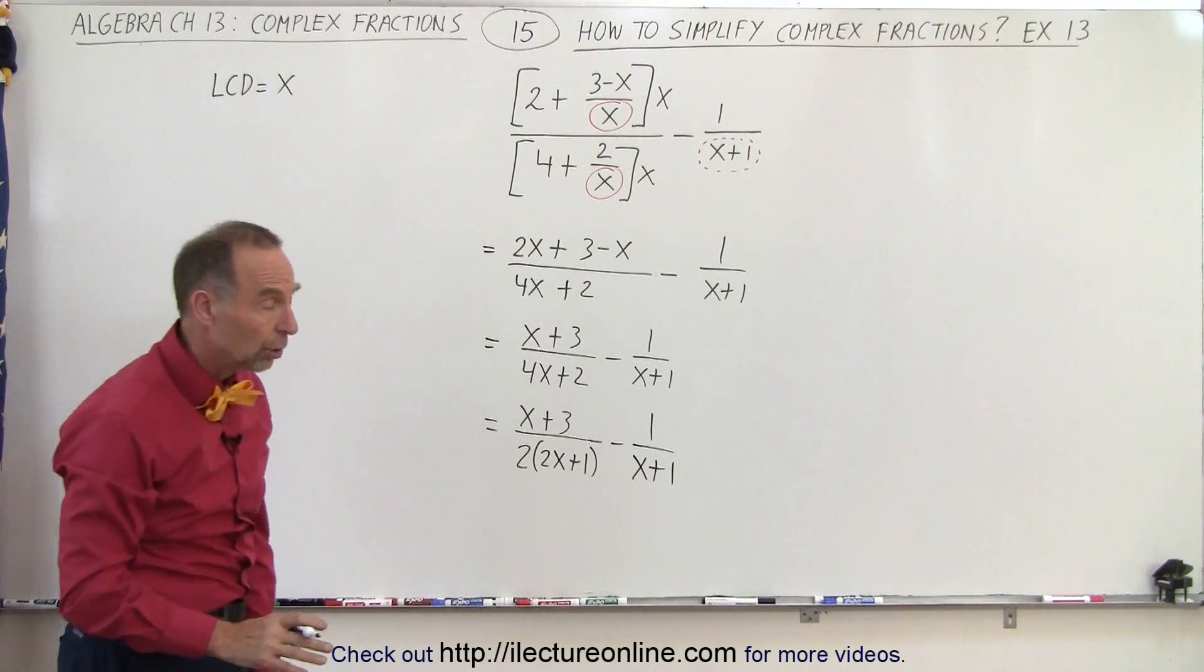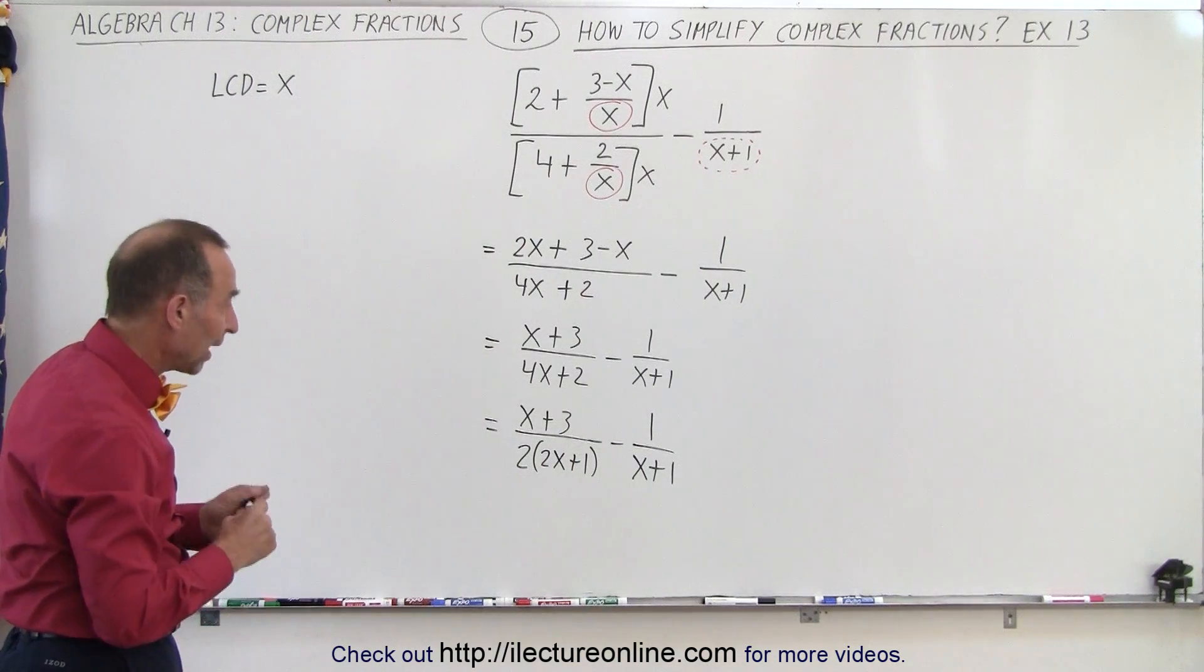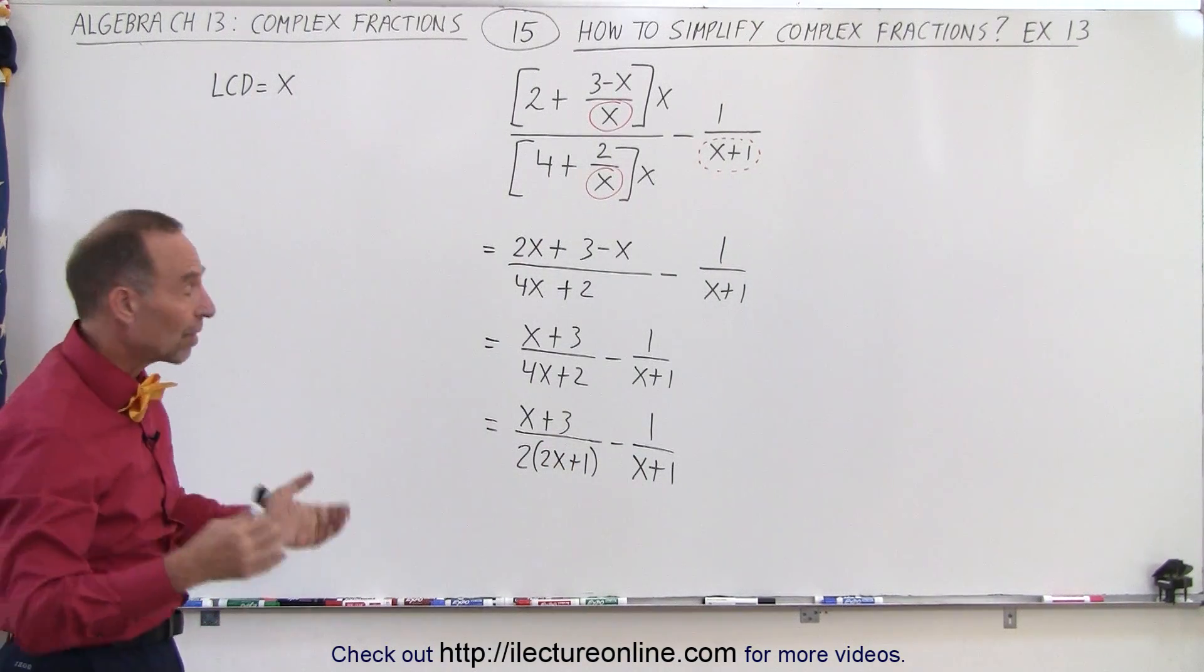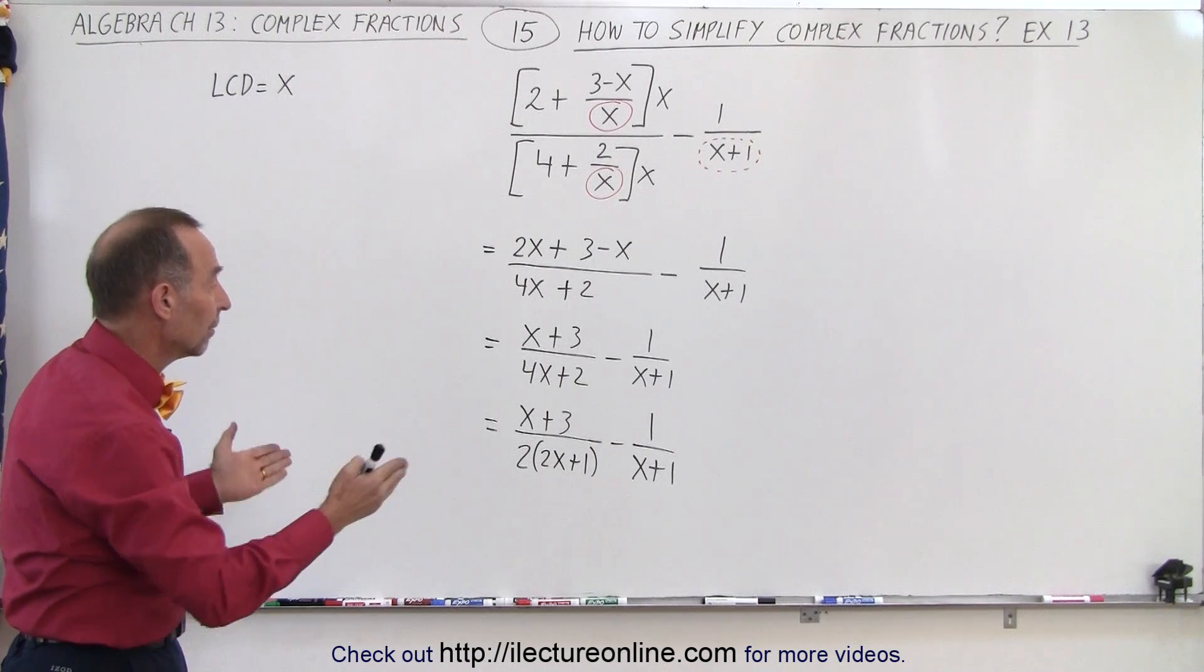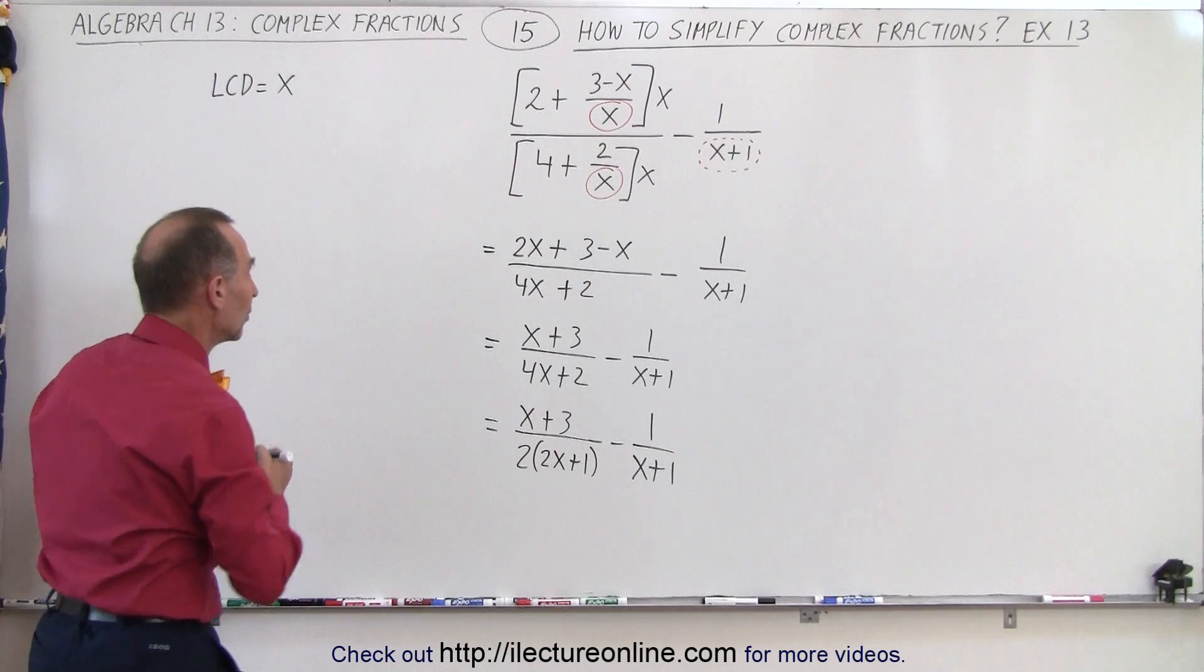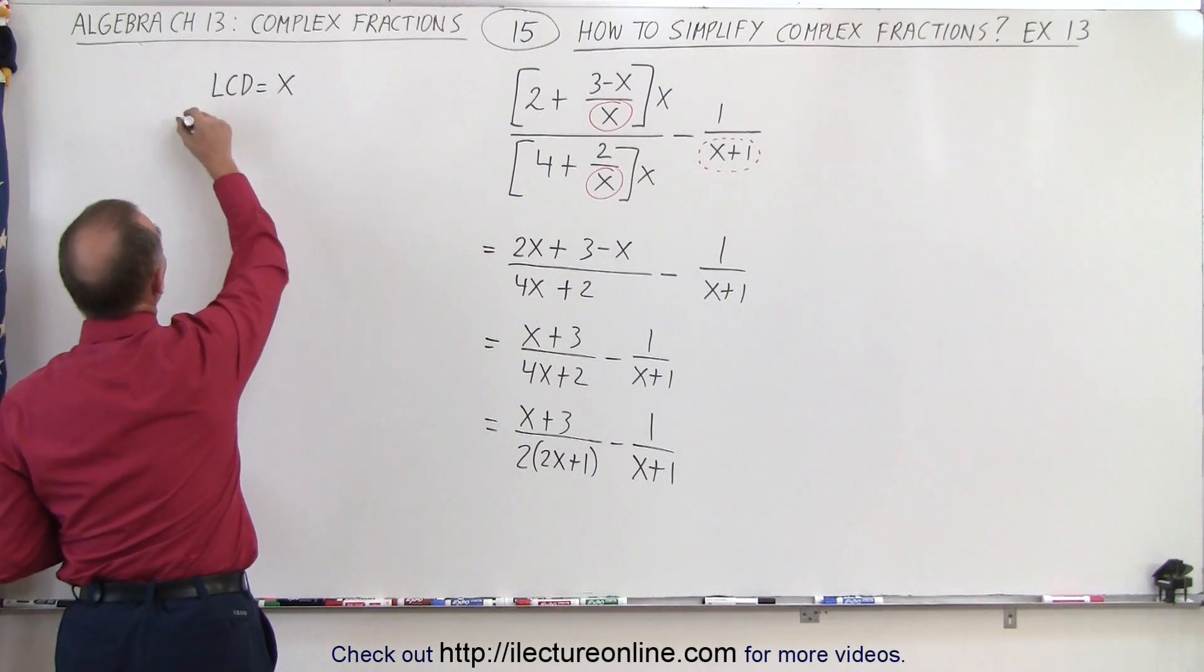And now we have two what we'd call rational expressions that need to be subtracted from one another and there we're going to find the lowest common denominator by multiplying the two together.